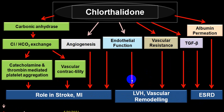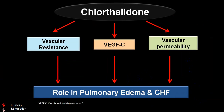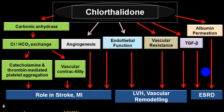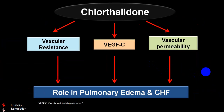These are called pleiotropic effects — beneficial effects apart from diuresis and peripheral vasodilatation. By acting on vascular resistance, growth factors, and vascular permeability, it is beneficial in pulmonary, renal, and congestive heart failure. This is why chlorthalidone has a superior advantage over thiazide group of diuretics.